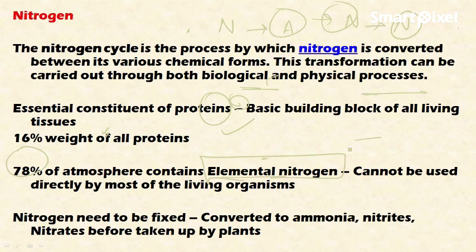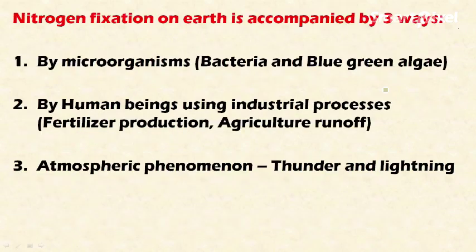Nitrogen is present in the atmosphere up to 78% in the form of elemental nitrogen. However, this elemental nitrogen cannot be utilized directly by plants or most living beings on Earth. It has to be converted into other forms — it needs to be fixed and converted into ammonia, nitrites, and nitrates before being taken up by plants.